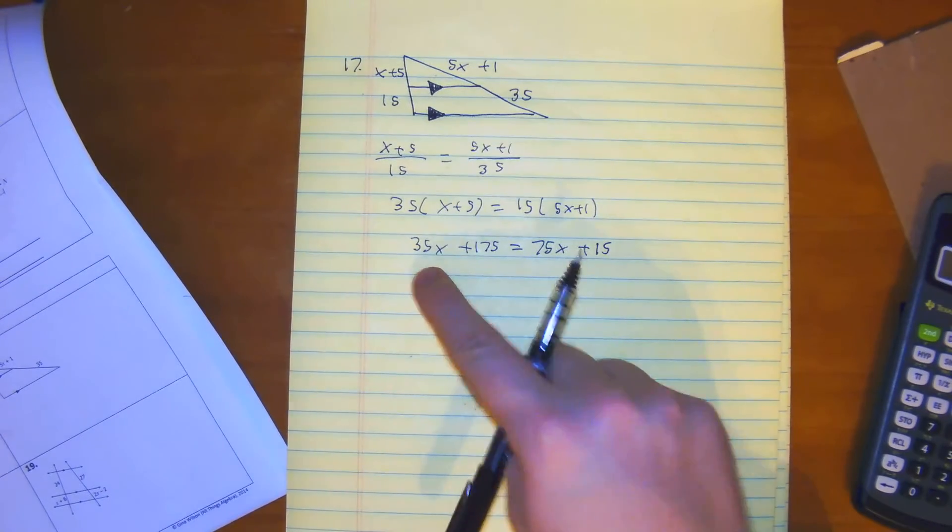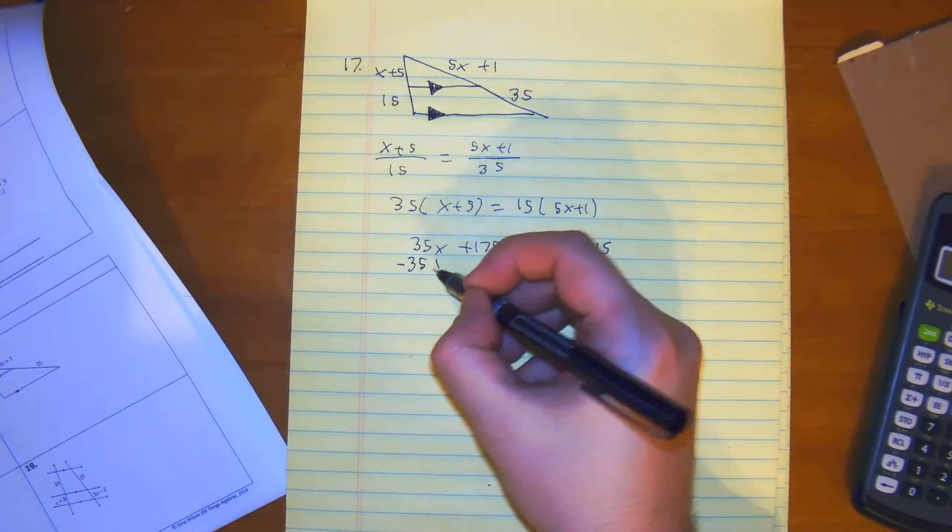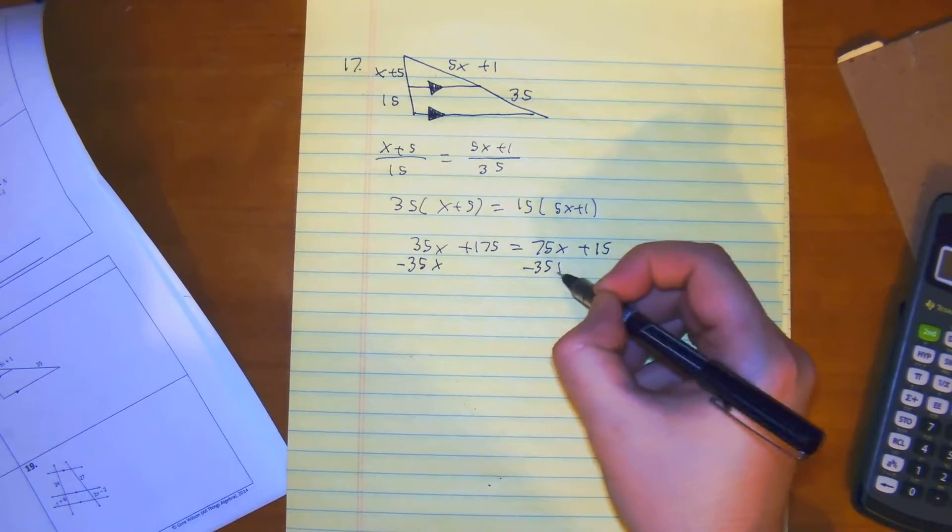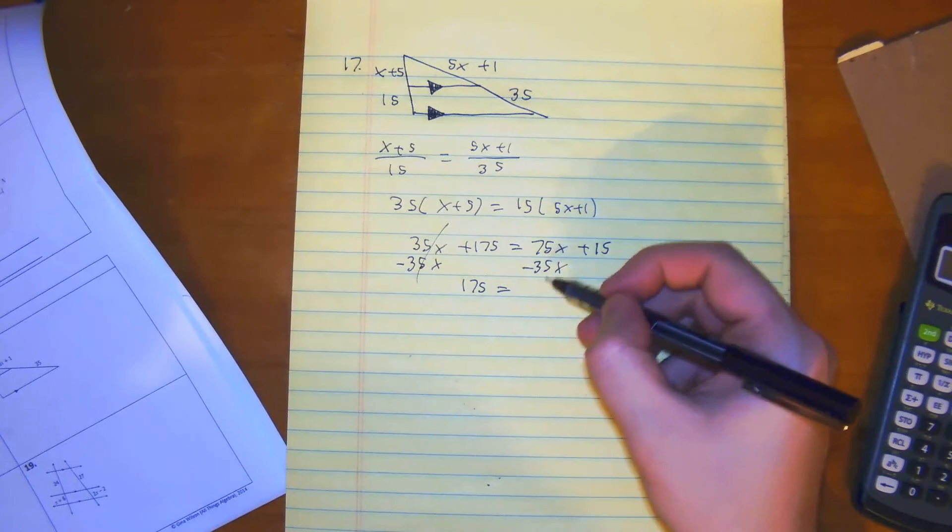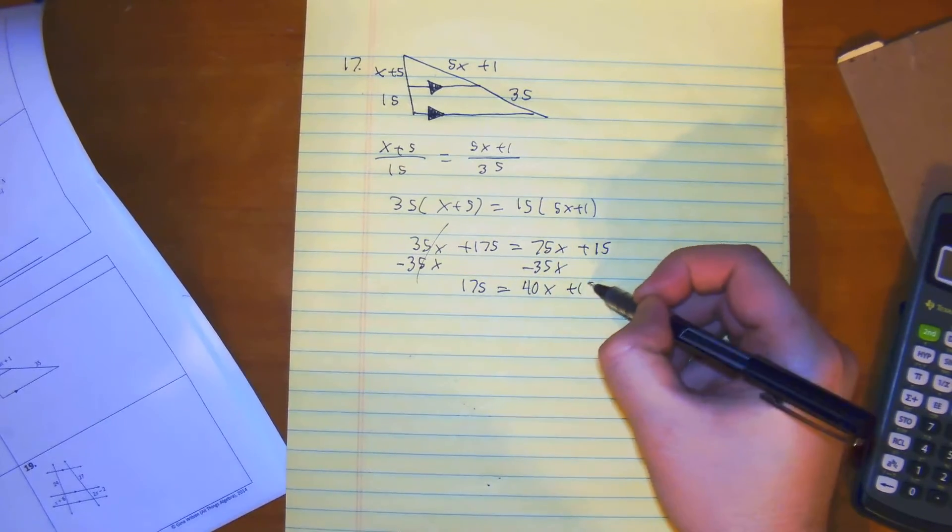I see that 35 is smaller, so I'm going to subtract 35x from both sides. We get 175 is equal to 40x plus 15.